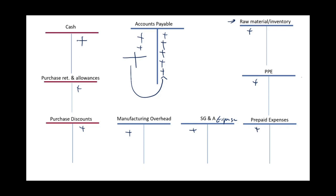So I identified 8 accounts that revolve around buying stuff on credit. The process is quite involved from a journal entry accounting perspective.